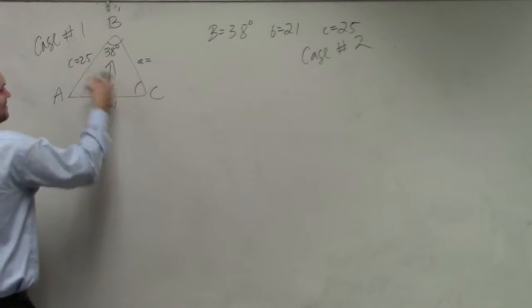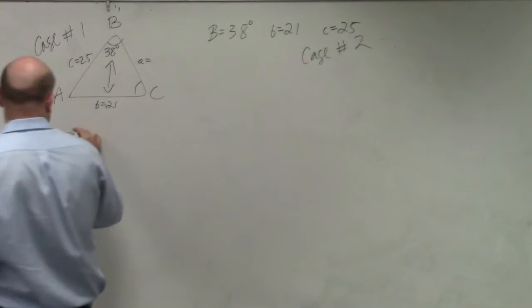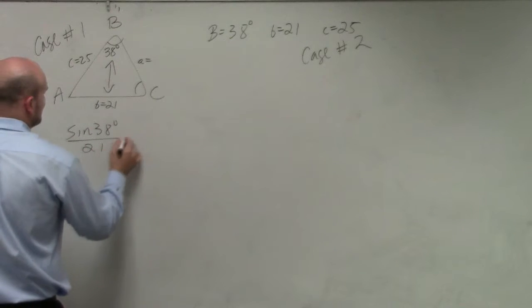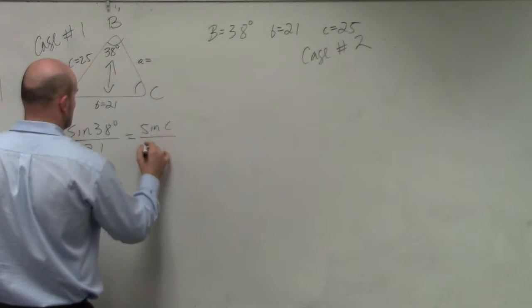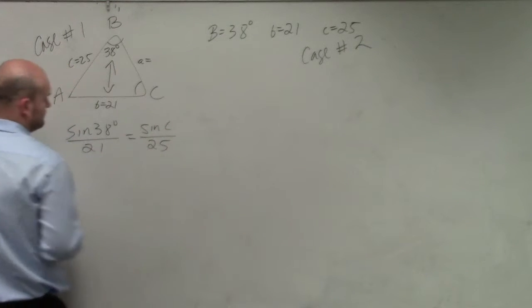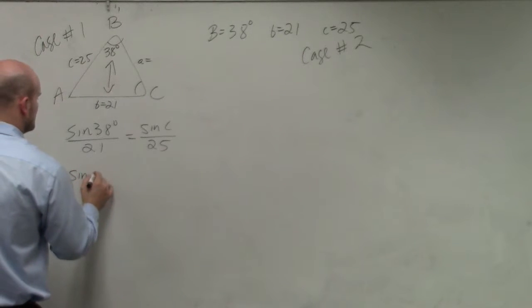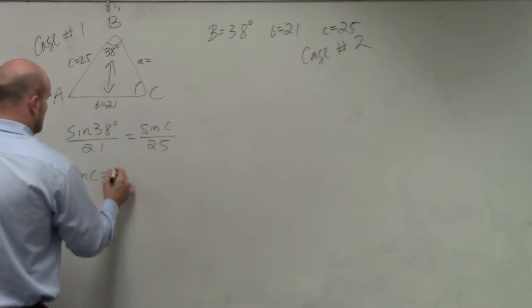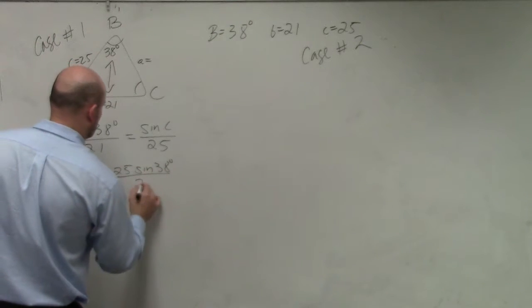So since I'm solving for an angle, I'm going to want to make sure my angles are in my numerator. So I will have the sine of 38 degrees all over 21 divided by sine of c all over 25. Multiply by 25 on both sides. Sine of c equals 25 times sine of 38 degrees all over 21.